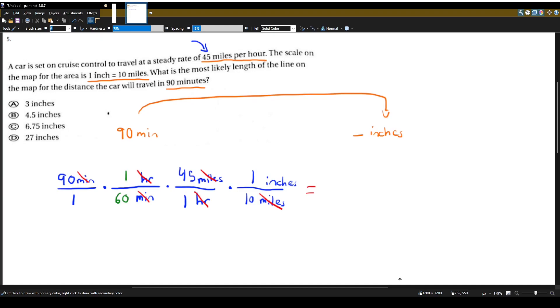So now let's do some calculator work. So let's multiply all the numerators. 90 times 1 times 45 times 1. And I will use my calculator for that. And get, let's see here. 90 times 45 is 4050. And then we'll divide it by, let's multiply all the denominators. 1 times 60 times 1 times 10. That one's a little easier. It's just 600. And don't forget it's inches. So let's just divide this now. 4050 divided by 600. And we will actually get 6.75 inches. Which is answer choice C.